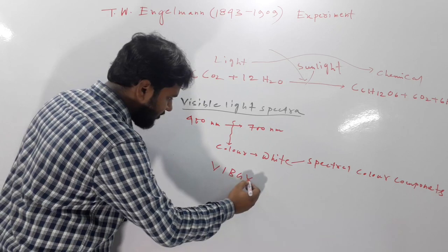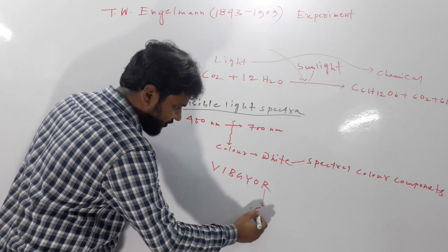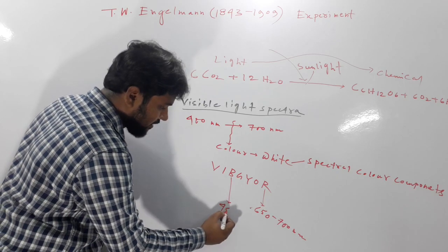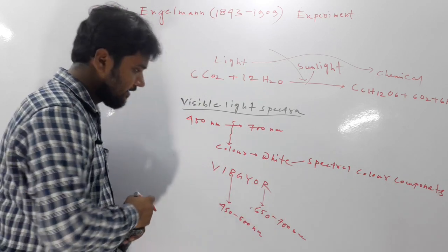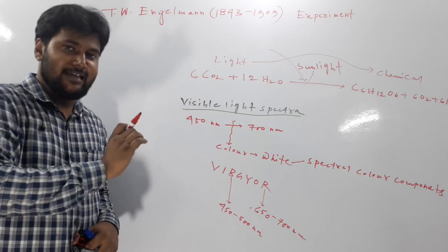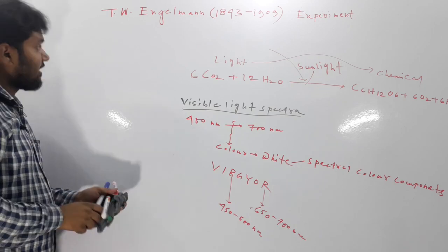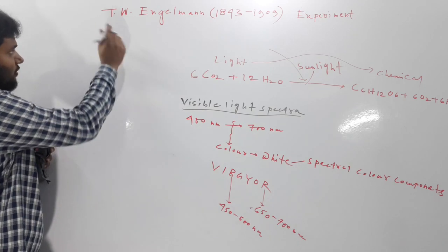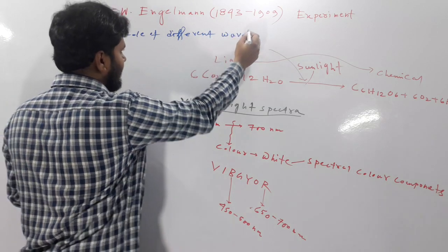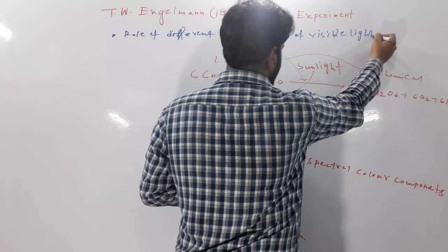The seven colors are VIBGYOR — V-I-B-G-Y-O-R. Red color has a wavelength of 650 to 700 nanometers, and blue color has a wavelength of around 500 nanometers. T.W. Engelmann showed us the role of these different wavelengths and different colored lights in photosynthesis. The significance of Engelmann's experiment is that it shows us the role of different wavelengths of visible light in photosynthesis.